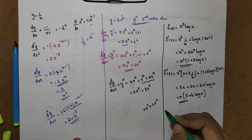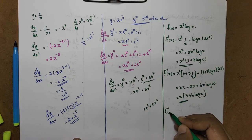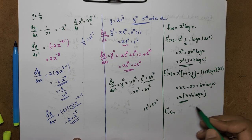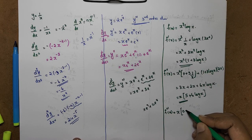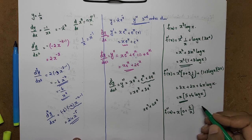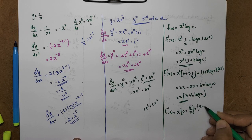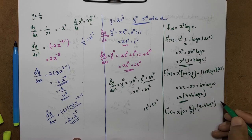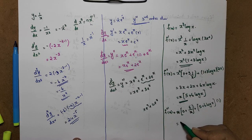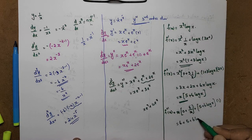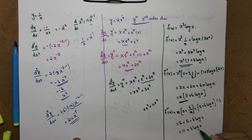So f''(x) = 5x + 6x log x. Now differentiate for the third derivative f'''(x): using the product rule on 6x log x. x into derivative of 5 is 0, plus 6 times log x into derivative of x gives 6/x, plus second function (5 + 6 log x) into derivative of x is 1. So x cancels: 6 + 5 + 6 log x = 11 + 6 log x. So f'''(x) = 11 + 6 log x.